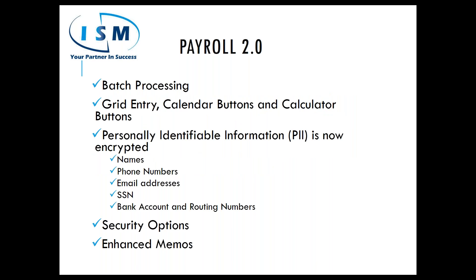In Payroll 2.0, there is now batch processing — you can set up multiple batches for payroll data entry. Previously, you could only run one payroll at a time, so if you had salaried and hourly employees or different departments on different pay cycles, you had to post one at a time. Now you have the ability to run multiple batches simultaneously. You also get grid entry functionality like in sales order and general ledger, with calendar and calculator buttons. Payroll has now moved to the 4.x framework so it looks like all the other upgraded modules.